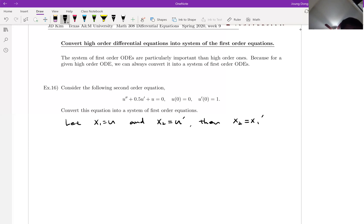u double prime is x2 prime. Is that clear? Now let me try to replace all the u terms in terms of x1 and x2. Here we go.